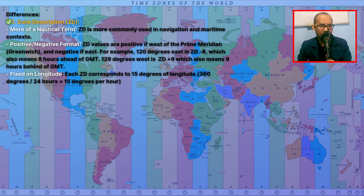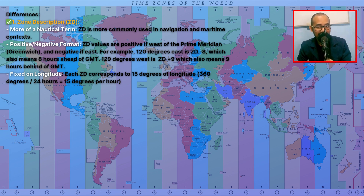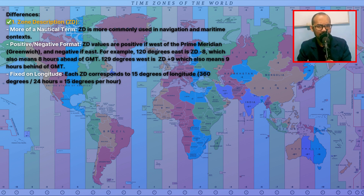For differences, zone description is more of a nautical term, more commonly used in navigation and maritime contexts. ZD values are positive if west of the primary meridian (Greenwich) and negative if east. For example, 120 degrees east is zone description minus 8, meaning 8 hours ahead of GMT. 129 degrees west is zone description plus 9, meaning 9 hours behind GMT.